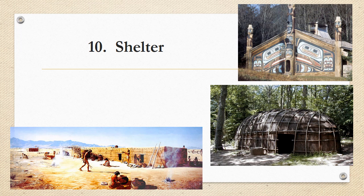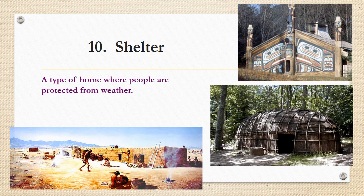Shelter is another basic term you need to know. Shelter is a type of home where people are protected from the weather. You can see the different types of shelter depending on the environment — in the bottom left we see the Pueblo homes made out of clay, the Iroquois shelter in the bottom right corner, and the Kwakiato shelter in the top right corner.